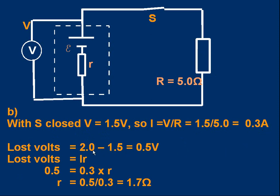So we know the current. We also know the lost volts. The emf is 2 and the potential difference between the terminals dropped to 1.5 when the switch was closed. So the lost volts is 2 minus 1.5. It's 0.5 volts. But that lost volts equals the current times the internal resistance. So 0.5 volts is a current of 0.3 times little r. Rearrange that. R to two significant figures works out as 1.7 ohms.